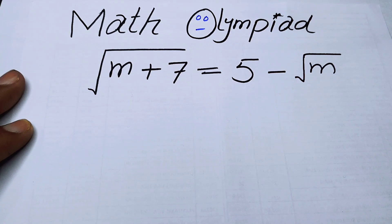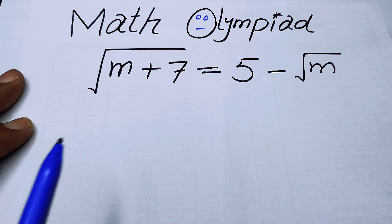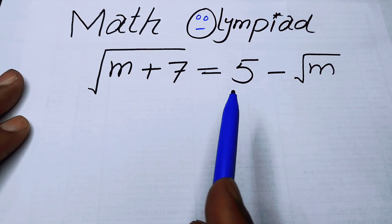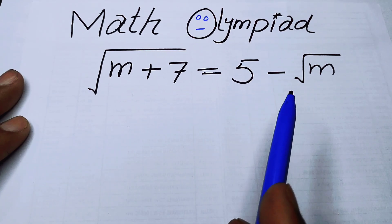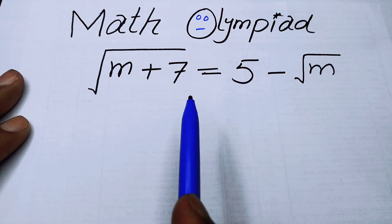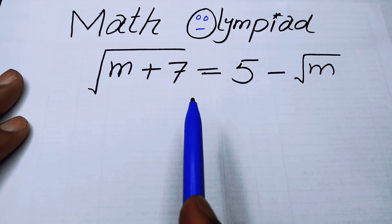Hello everyone, welcome back to the Map of Mathematics. In this video we are going to solve this radical or square root problem. We have √(m+7) = 5 - √m, and we will solve this problem for the value of m.